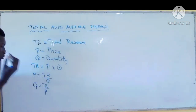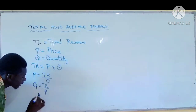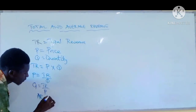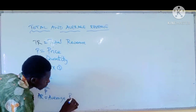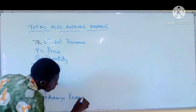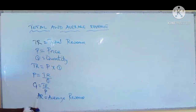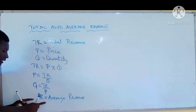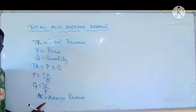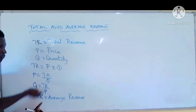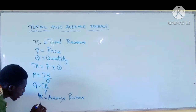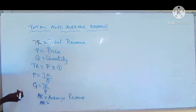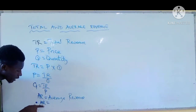We also have what we call AR, which means average revenue. The formula for average revenue is also very simple. Whenever you have the average of anything, it's that thing divided by the quantity. So average revenue equals total revenue divided by quantity.